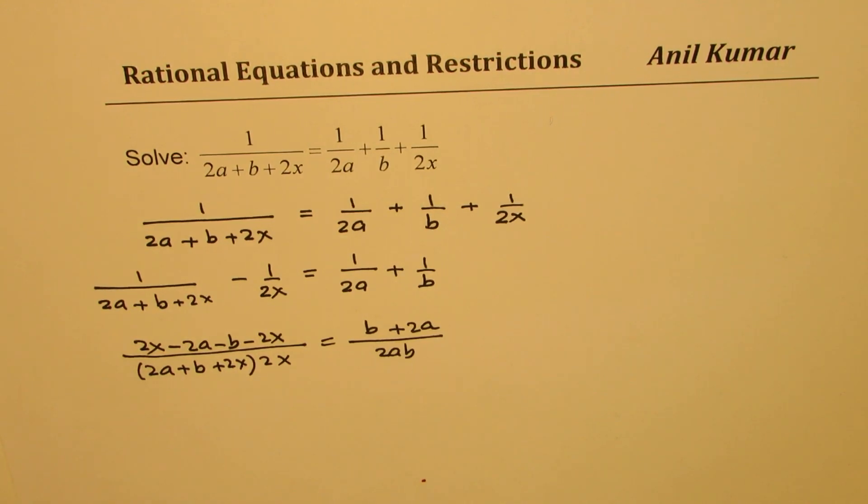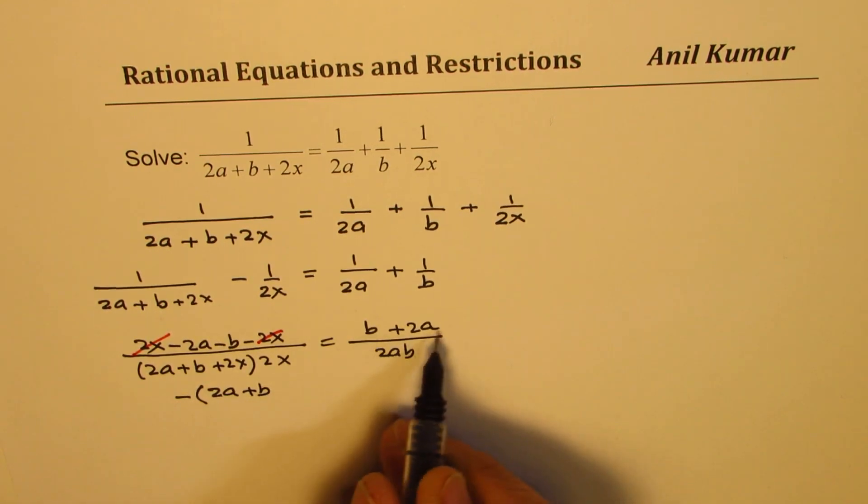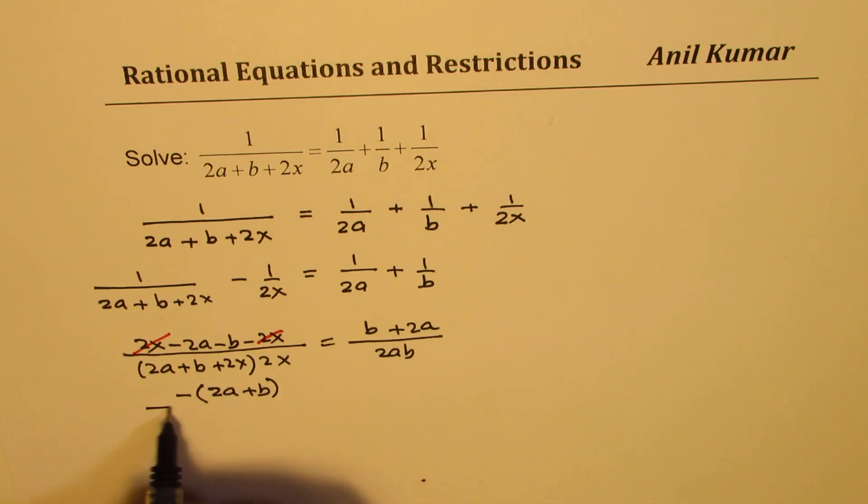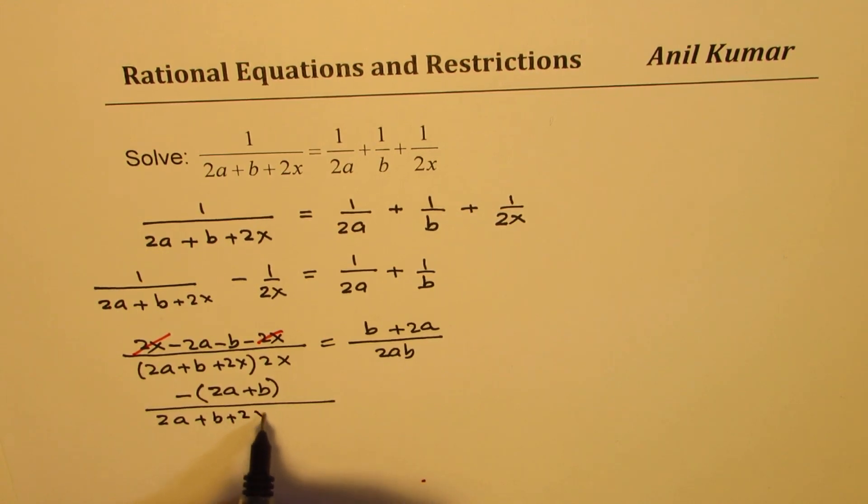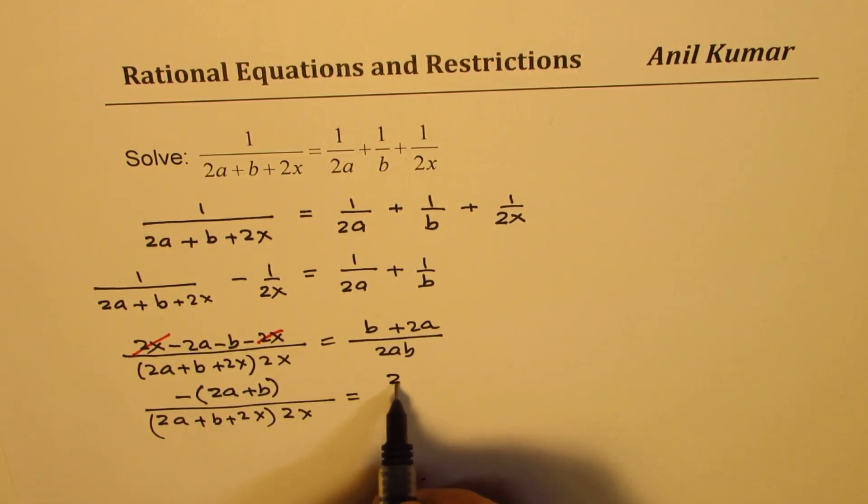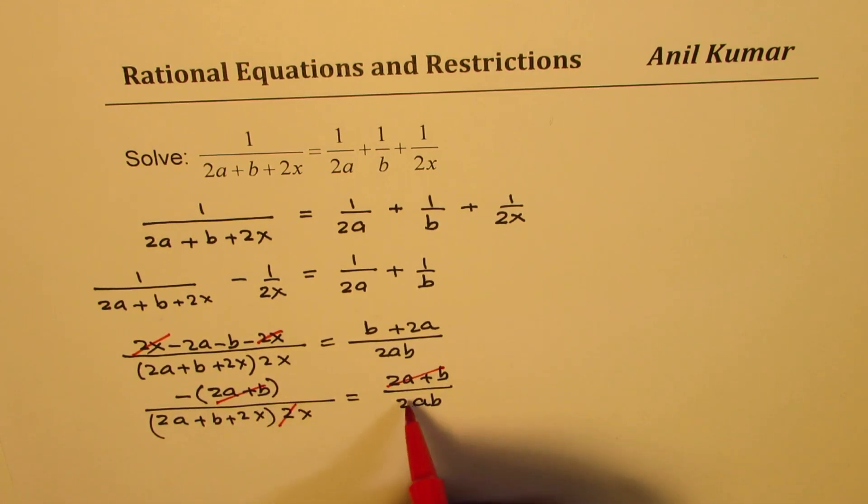Now here you see that 2x and 2x in the numerator cancel. We have minus 2a minus b. I could take minus common and write this as 2a plus b, because I am seeing that 2a plus b here over all this. So we can see that this can be canceled. This 2 also gets canceled.